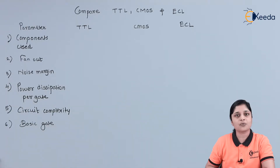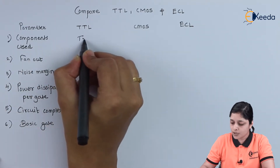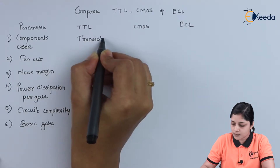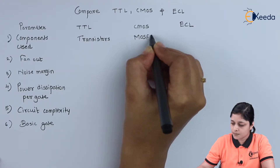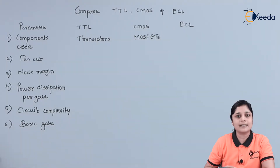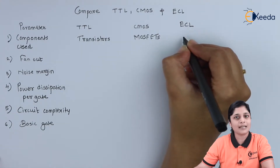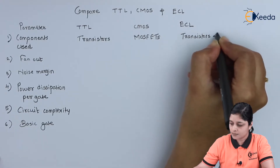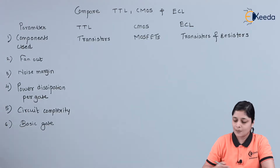We will start with the first parameter: the components used while designing these three technologies. For TTL, the most important component is transistors. In CMOS, it is MOSFETs — metal oxide semiconductor field effect transistors. And for ECL, we use transistors and resistors.